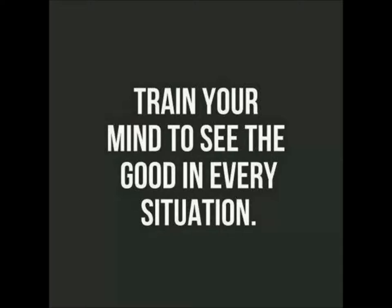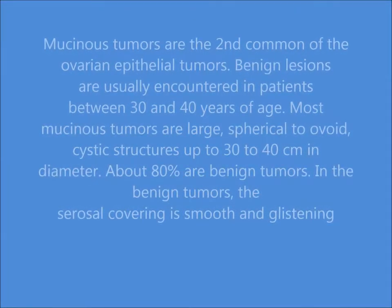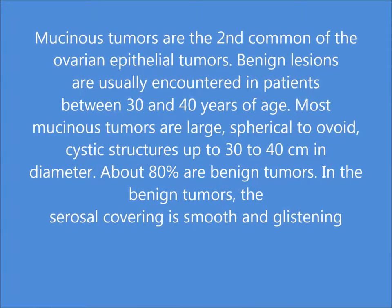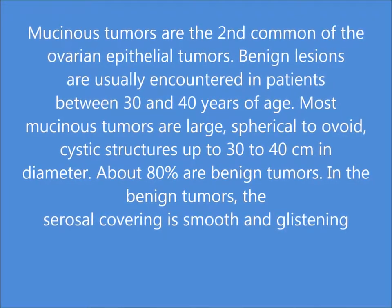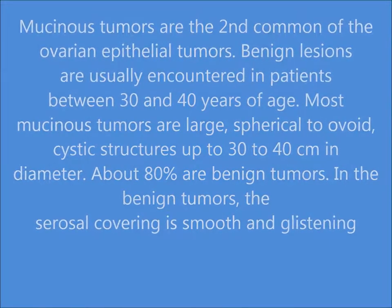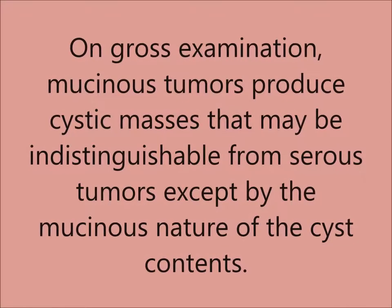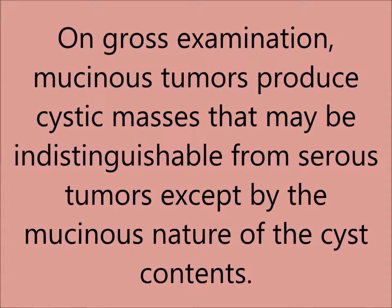Today we will discuss mucinous cyst adenoma. These are the second most common among the ovarian epithelial tumors. They are more commonly benign and are encountered in patients 30 to 40 years of age. Most are large, spherical to ovoid, up to 40 cm in diameter, and their outer surface is smooth and glistening. On gross examination, mucinous tumors produce cystic masses that may be indistinguishable from serous tumors except by the mucinous nature of the cyst contents.